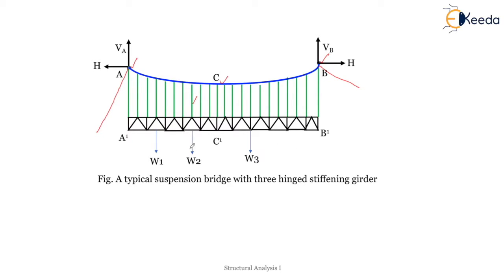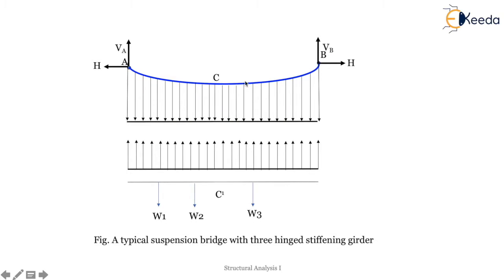Let us consider a free body diagram by cutting a section in between. We consider this uniformly distributed load acting as w per unit length. Here C-dash and C are shown on a single line in this free body diagram.